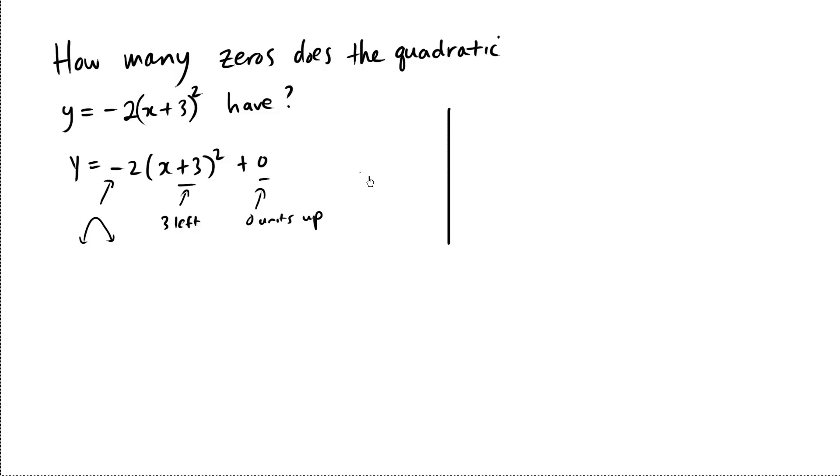So if I were to actually graph this, we're shifting 3 left, 1, 2, 3, that's negative 3, and then we're moving 0 units up, and we have a graph that's kissing the point negative 3 here, and it's opening downwards.